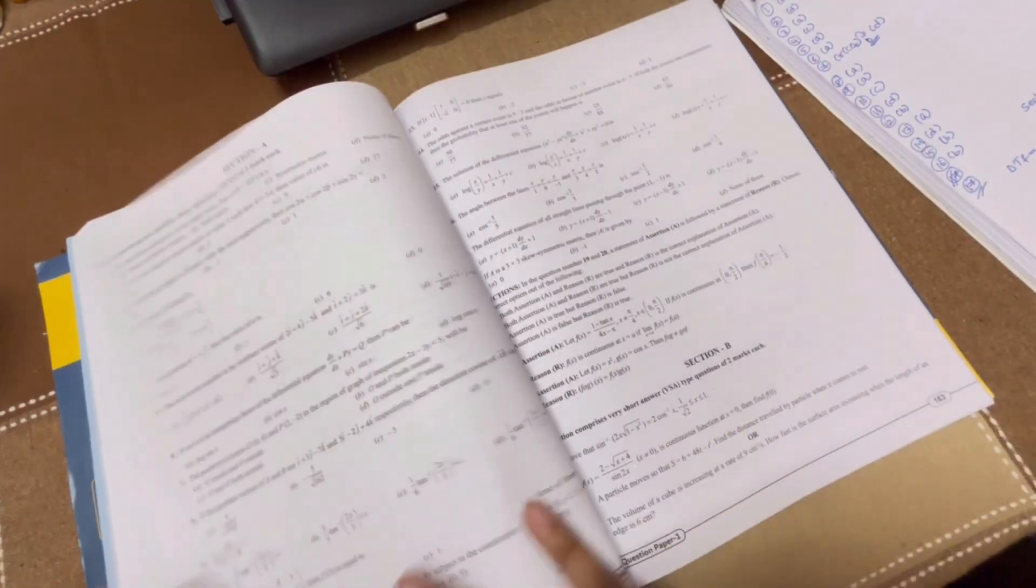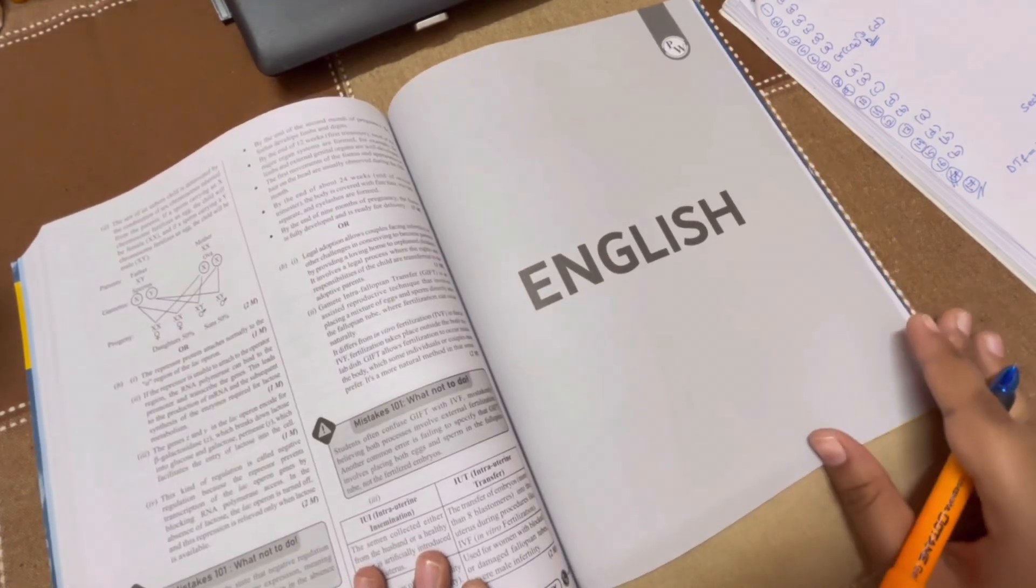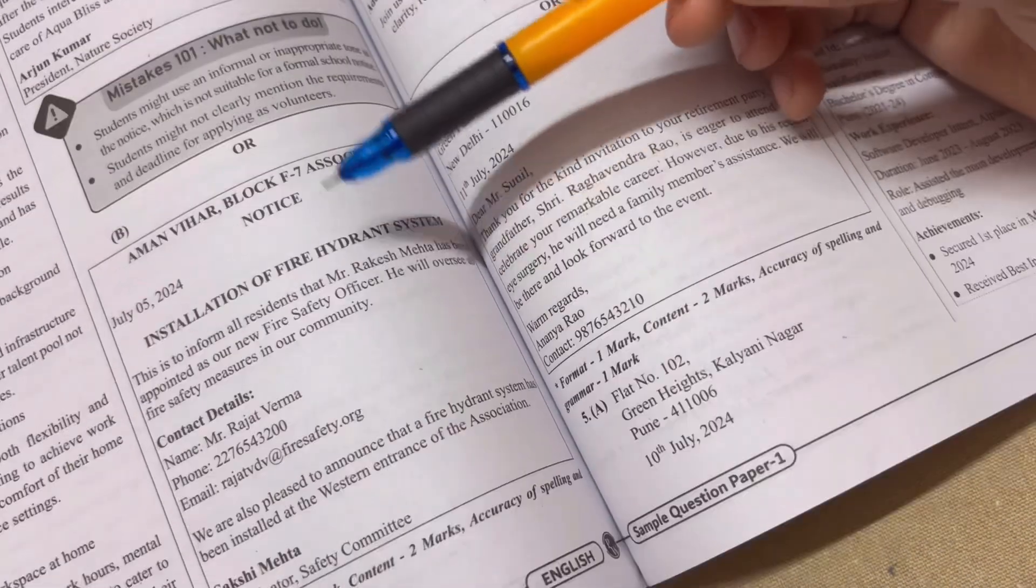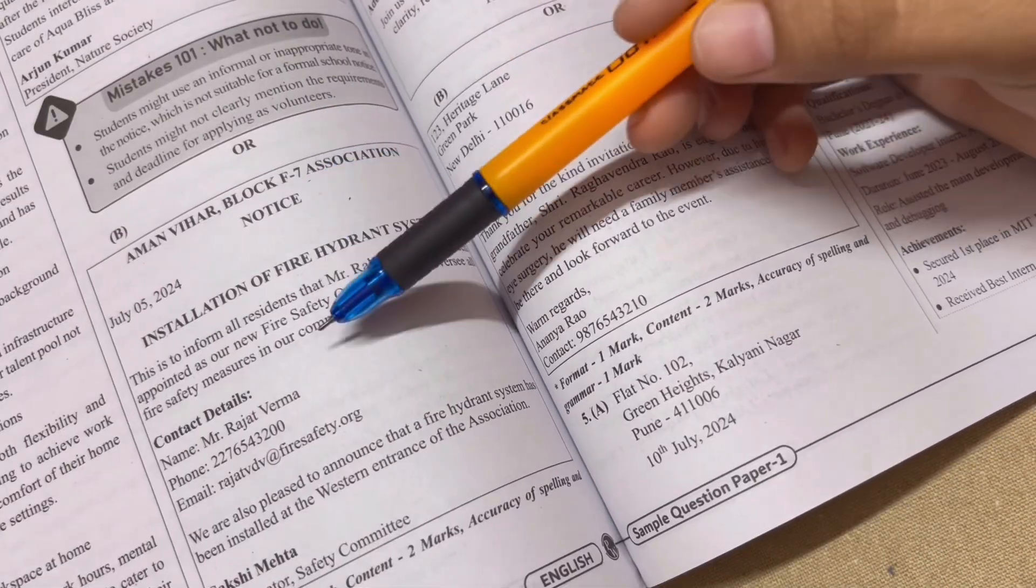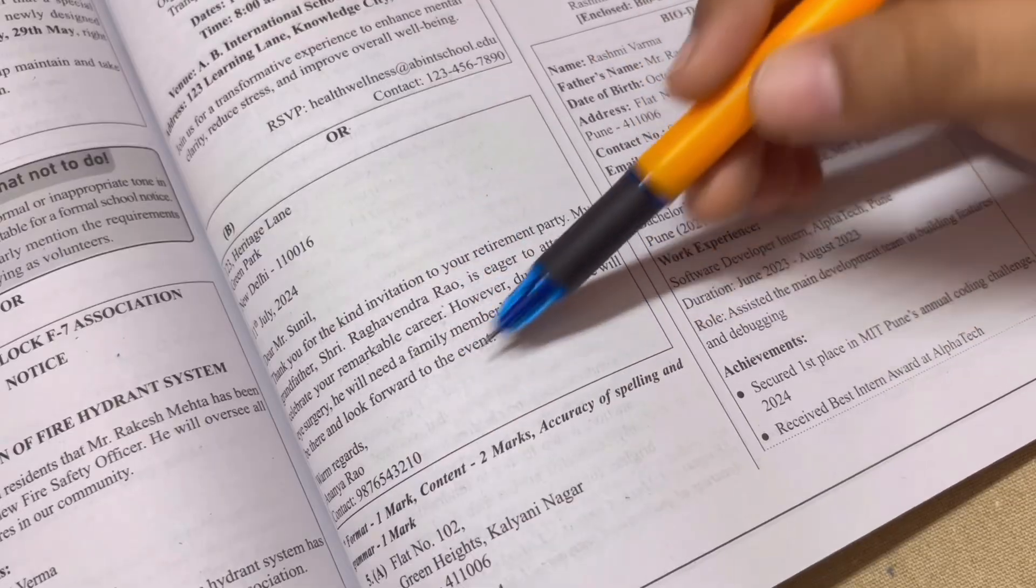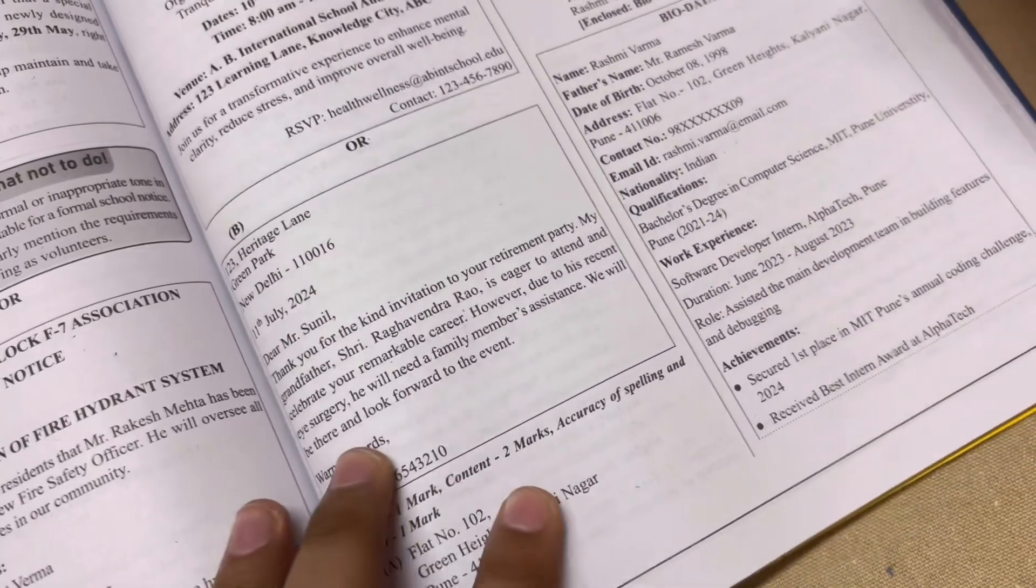We have got all the five subjects - physics, chemistry, mathematics, biology, English - in just one book, with six sample papers each for each subject. And all these sample papers are very familiar to the board exam and it is strictly based on the CBSE board pattern.